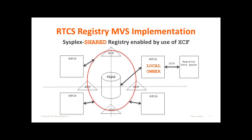When data in a registry needs to be accessed from address spaces executing on a system in the sysplex other than the one on which the registry data space exists, RTCS uses XCF to transmit the request to the owner of the registry and receive the response or data in return.